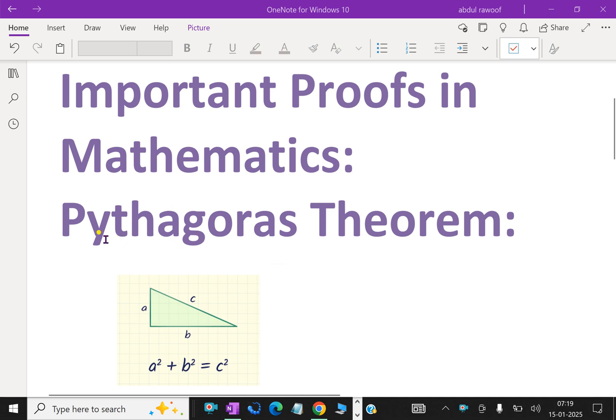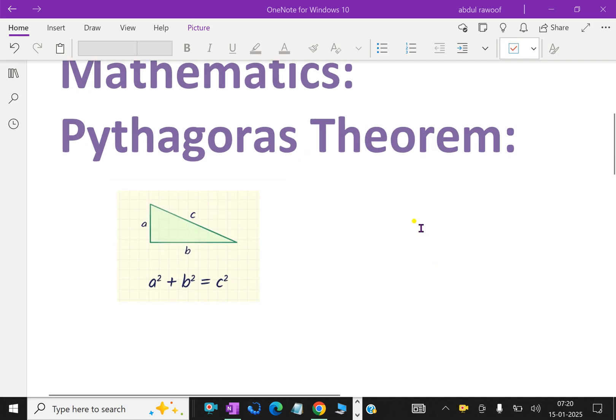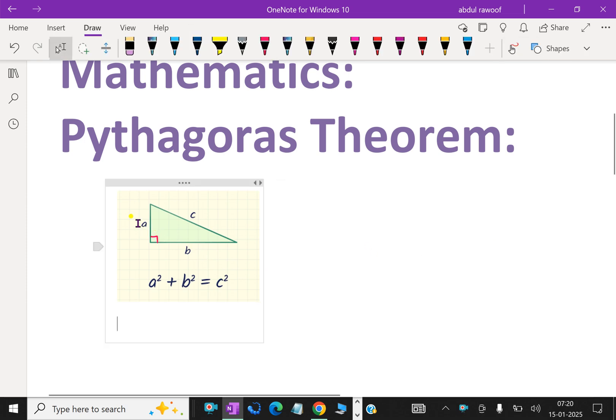In that, let us discuss about Pythagoras theorem and its proof. Look at here, this is a right-angle triangle having base B and height A and this is the hypotenuse.